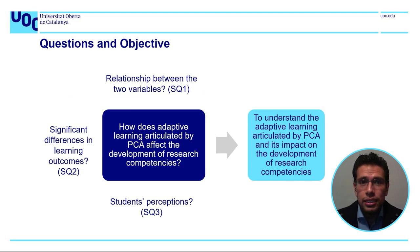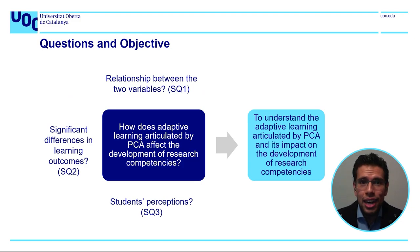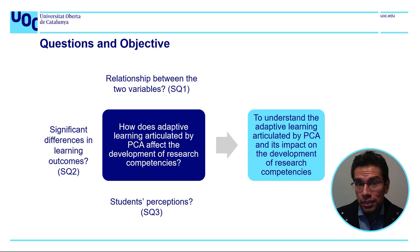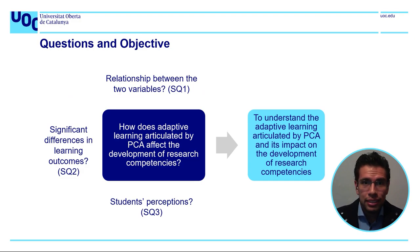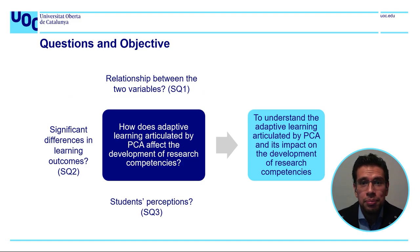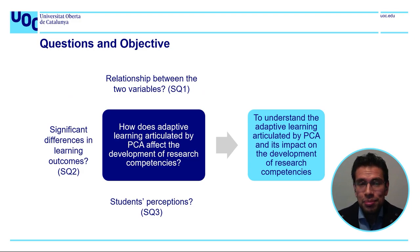Specifically, this study will focus on three sub-questions: Is there a relationship between adaptive learning articulated by PCA and acquired research competencies? Is there a significant difference in acquired research competencies between the pre-test and post-test and between the control and experimental groups? What are the student perceptions of adaptive learning articulated by PCA?